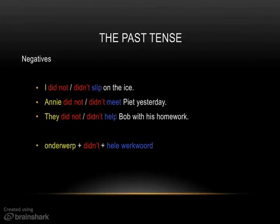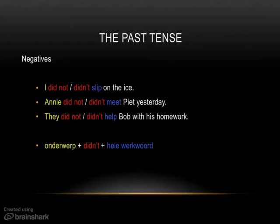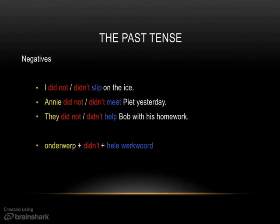The same color scheme applies: 'did' is your main verb in red, and the infinitive (hele werkwoord) is in blue. The yellow pieces are for the subject, the onderwerp. In order to make a negative, you use the format: subject + did not / didn't + hele werkwoord. So: I did not / didn't sleep on the ice. Annie did not / didn't meet Piet yesterday. They did not / didn't help Bob with his homework.